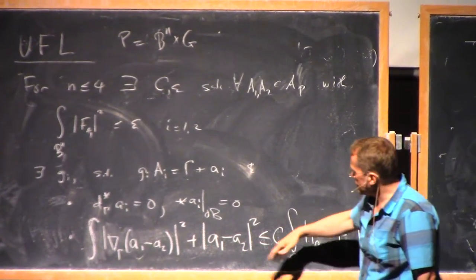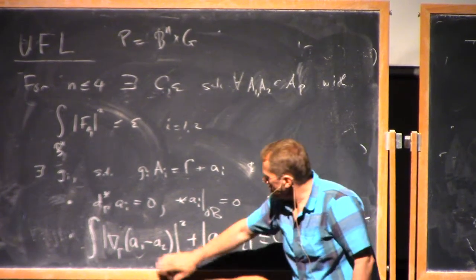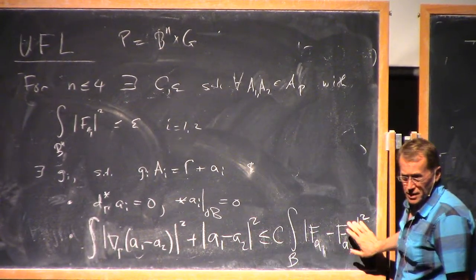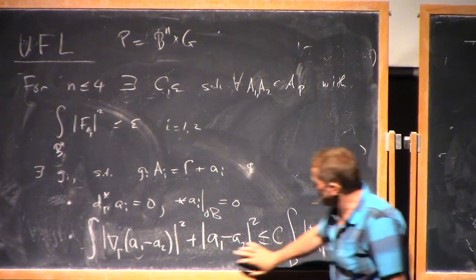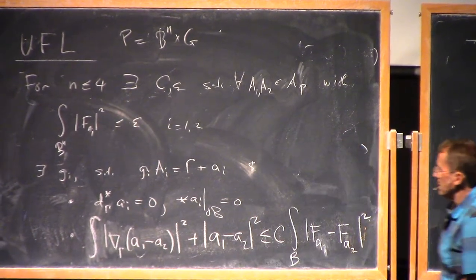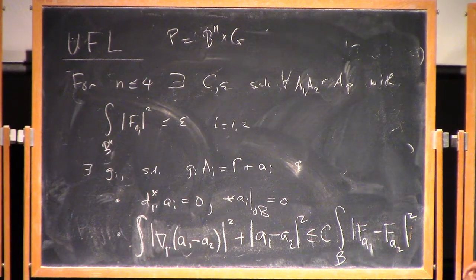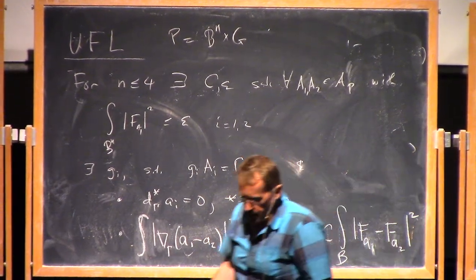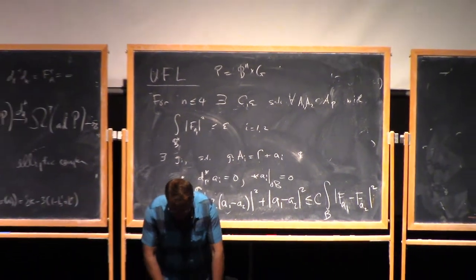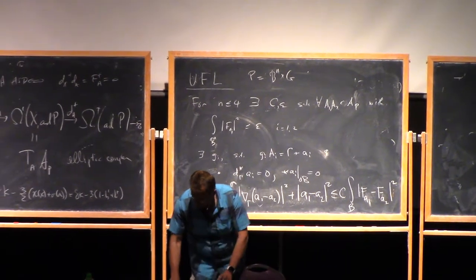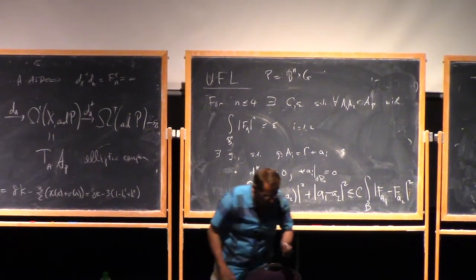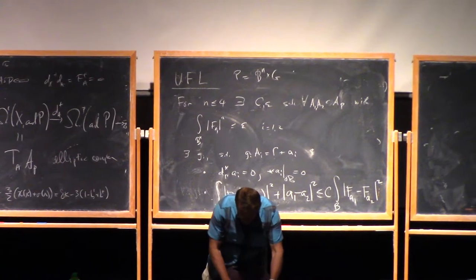So last time, the statement I had was, say, A_2 is zero. So we're just saying that the L^2 norm of the curvature controls the L^2_1 norm of the connection in the good gauge. Here, we're saying something slightly sharper, and we'll see that has a nice consequence. But again, I'm not gonna prove that in detail, but just go through one part of it.